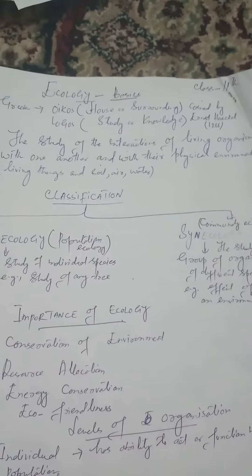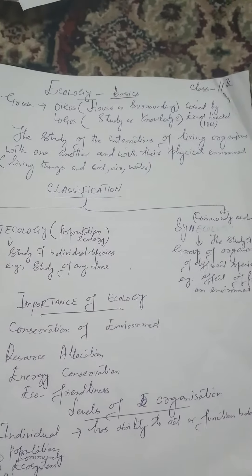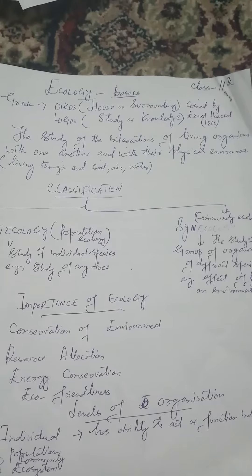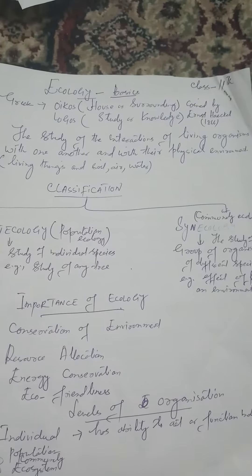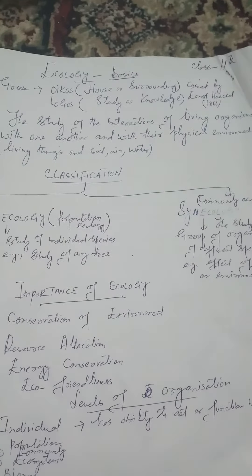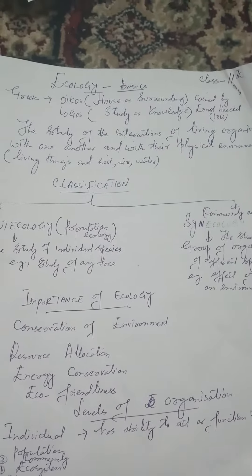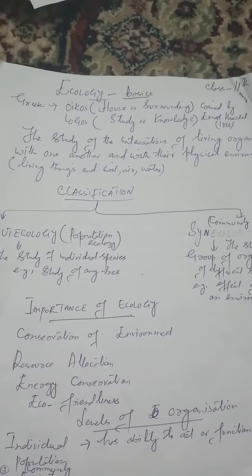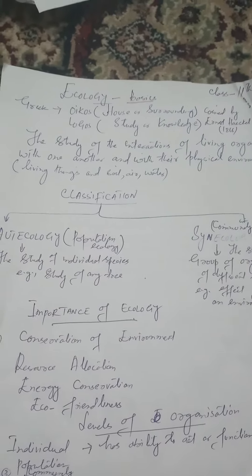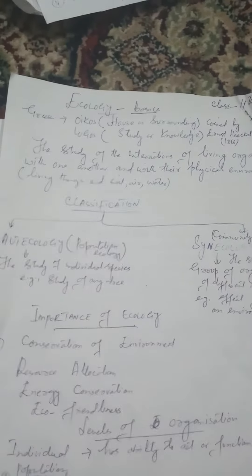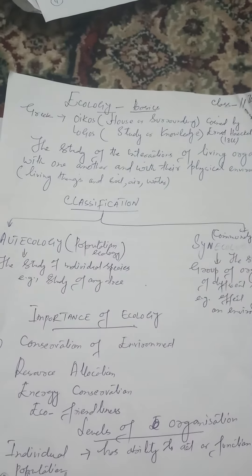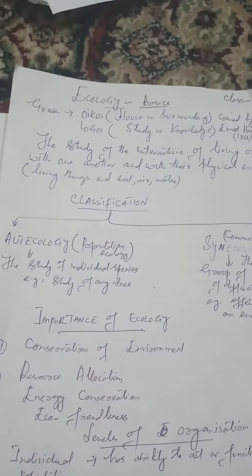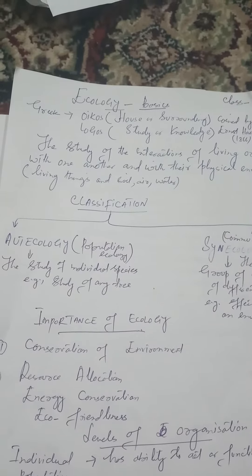The definition of Ecology is: the study of the interactions of living organisms with one another and with their physical environment — soil, air, water and living organisms. It can also be defined as the branch of biology that studies interrelationships between organisms and the environment.